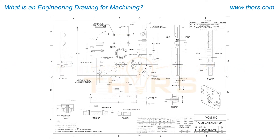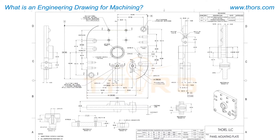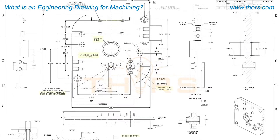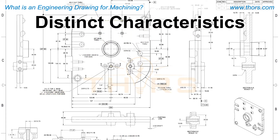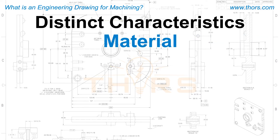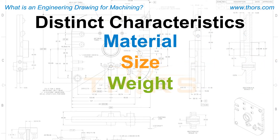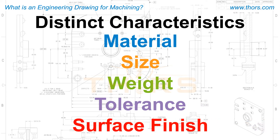A machining drawing is a type of engineering drawing that contains machining-specific information required to manufacture a part. Distinct characteristics of a machining drawing that differentiate it from other types of engineering drawings include the material, size, weight information, the tolerances specified on the drawing, and the surface finish information.